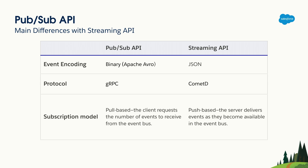In regards to the protocol, PubSub API uses gRPC while Streaming API uses CometD. And for the subscription model, PubSub API has a poll-based model which gives you control over the events, while the Streaming API has a push-based model, meaning you will always be listening on the event bus for new events to come.